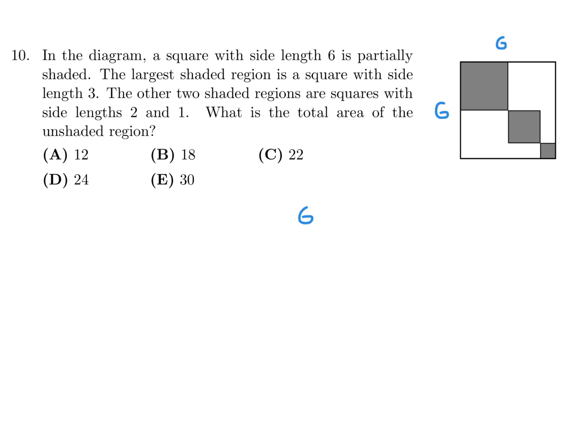So the largest... First of all, the whole square is 6 by 6. So the total area would be 6 by 6, which is 36. Now if we want the unshaded region, we would have to take 36 and subtract from it the area of the shaded region.